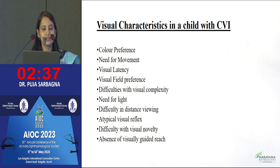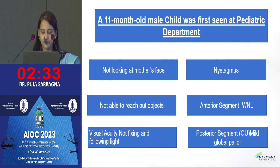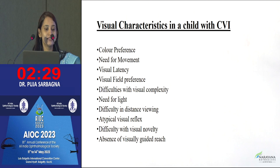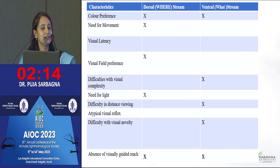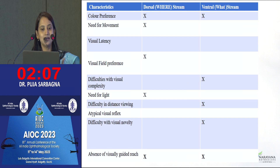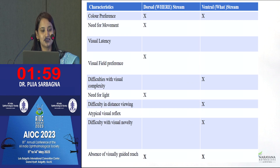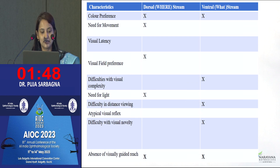The visual characteristics in CVI include mainly 10 features: color preference, need for movement, visual latency, visual field preference, difficulty with visual complexity, need for light, difficulty with distance viewing, atypical visual reflex, difficulty with visual novelty, and absence of visual guidance or reach. Dorsal stream is the 'where' stream and ventral stream is the 'what' stream. Color preference appears in both streams; need for movement is more in dorsal; visual latency is not present in either; visual field preference is more in dorsal; visual complexity difficulty is mainly in ventral; and absence of visual guidance or reach is present in both.